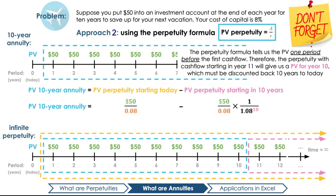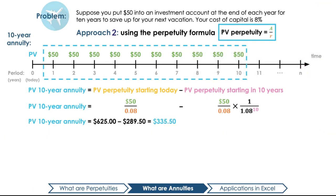We'll take $50 divided by 0.08, minus the second perpetuity, which is worth $50 divided by 0.08 ten years from now — or in today's dollars, $50 divided by 0.08, divided by (1 + 0.08) to the power of 10. You can think of this as either discounting the $50 to today's terms before solving for the perpetuity, or discounting the value of the entire perpetuity to today's terms. $50 over 0.08 is $625, and $50 over 0.08 over 1.08 to the 10 is $289.50. So the present value of the annuity is $625 minus $289.50, or $335.50.